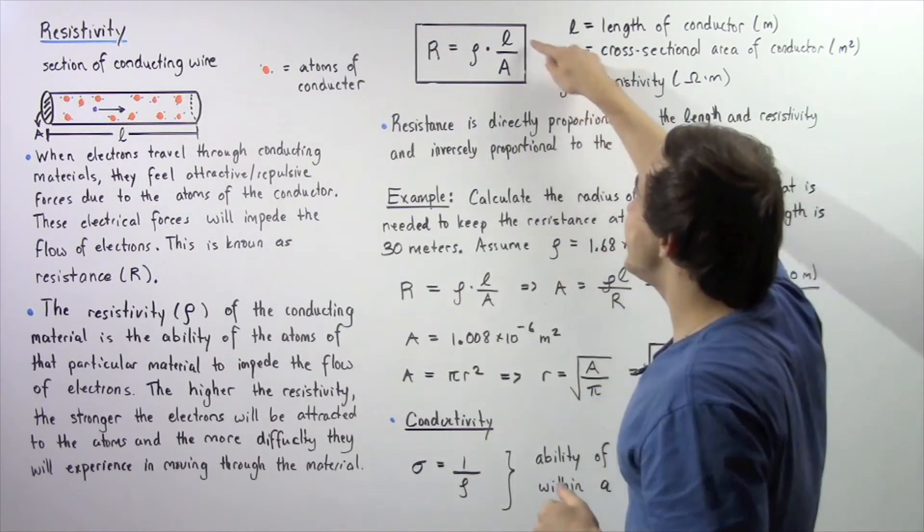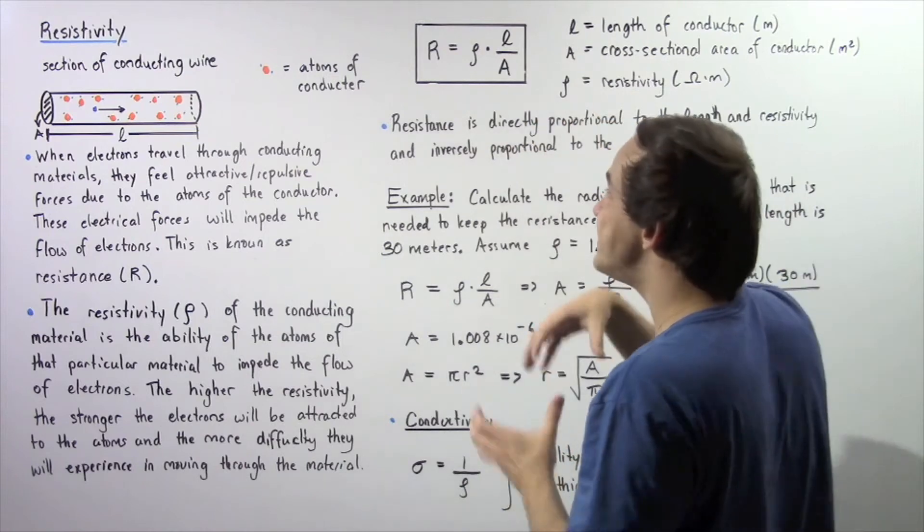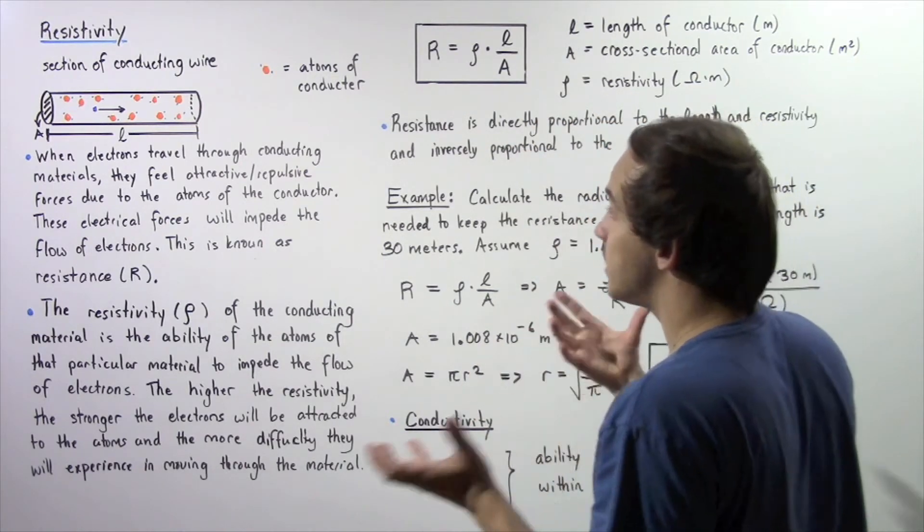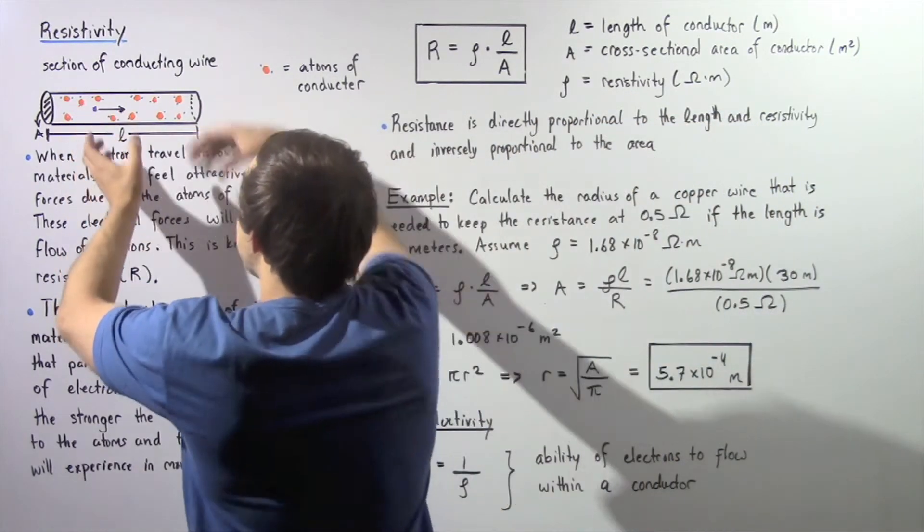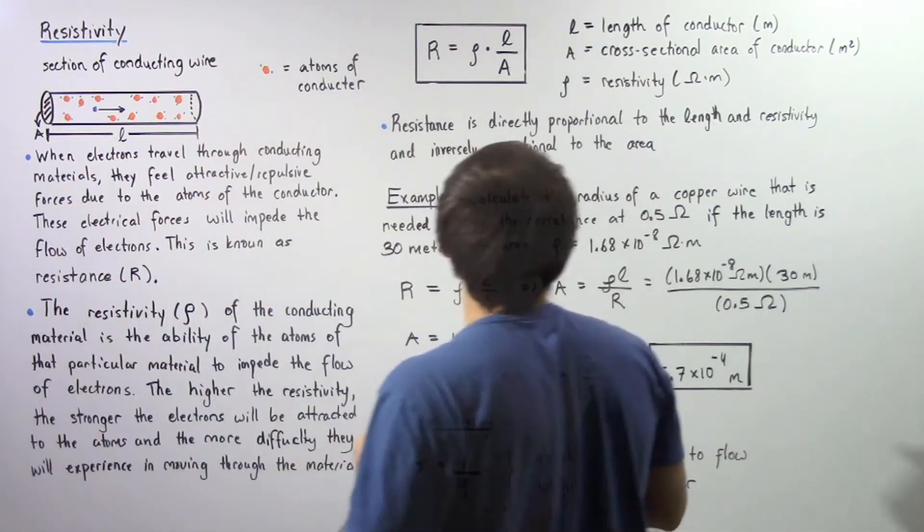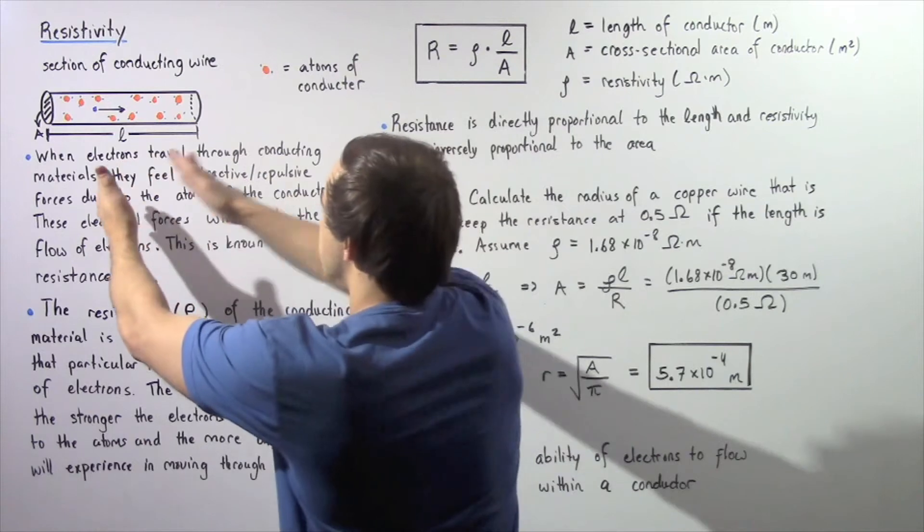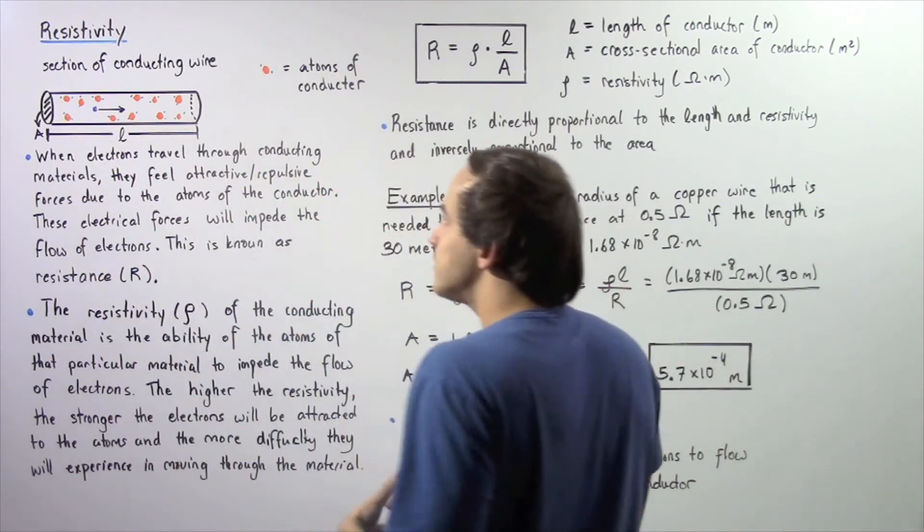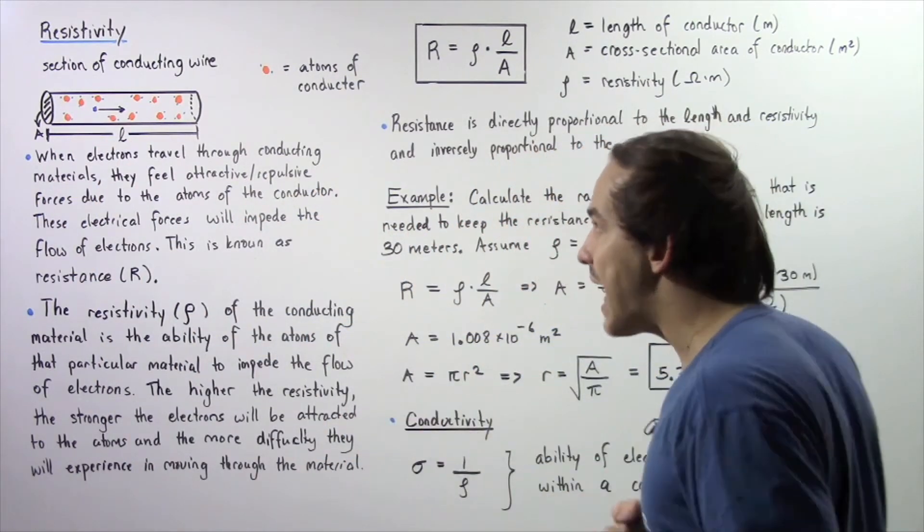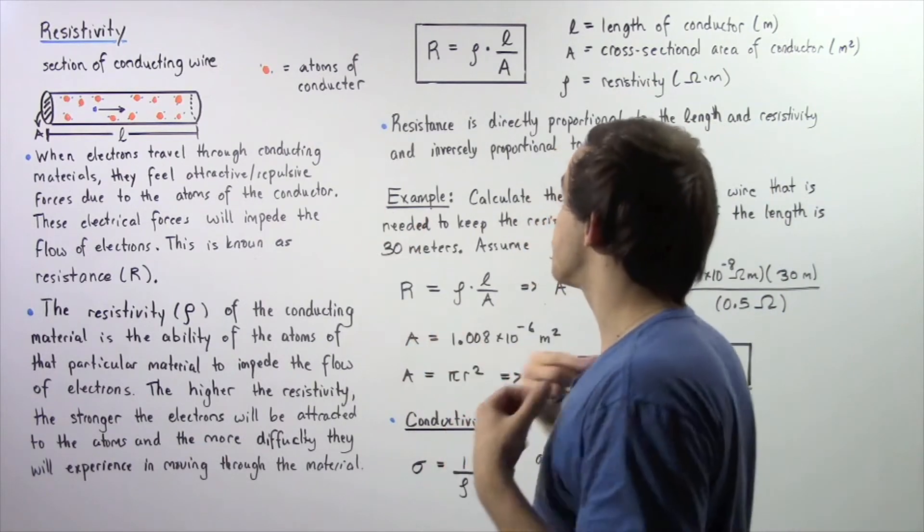Essentially, if we increase the area, we decrease our resistance because this electron has more space to navigate. However, if we increase our length, that basically means our electron has to travel through more of those atoms and so the resistance will increase.